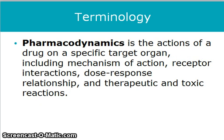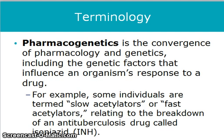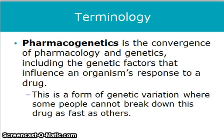Pharmacodynamics is the action of a drug on a specific target organ, including the mechanism of action, receptor interactions, dose-response relationship, and therapeutic and toxic reactions. Pharmacogenetics is the convergence of pharmacology and genetics, including the genetic factors that influence an organism's response to a drug. For example, some individuals are termed slow acetylators or fast acetylators relating to the breakdown of an antituberculosis drug called isoniazid. This is a genetic variation where some people cannot break down this drug as fast as others.